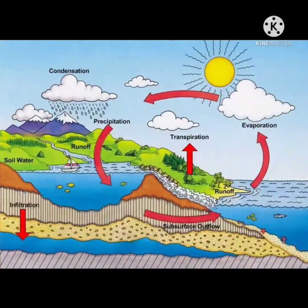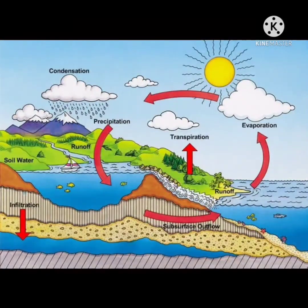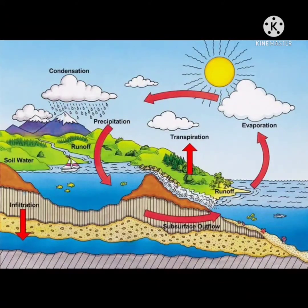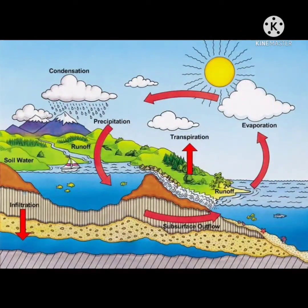When clouds become big and heavy, water falls down as rain. This rainwater fills lakes, rivers, seas, and oceans. As the sun shines, water changes into water vapor again.